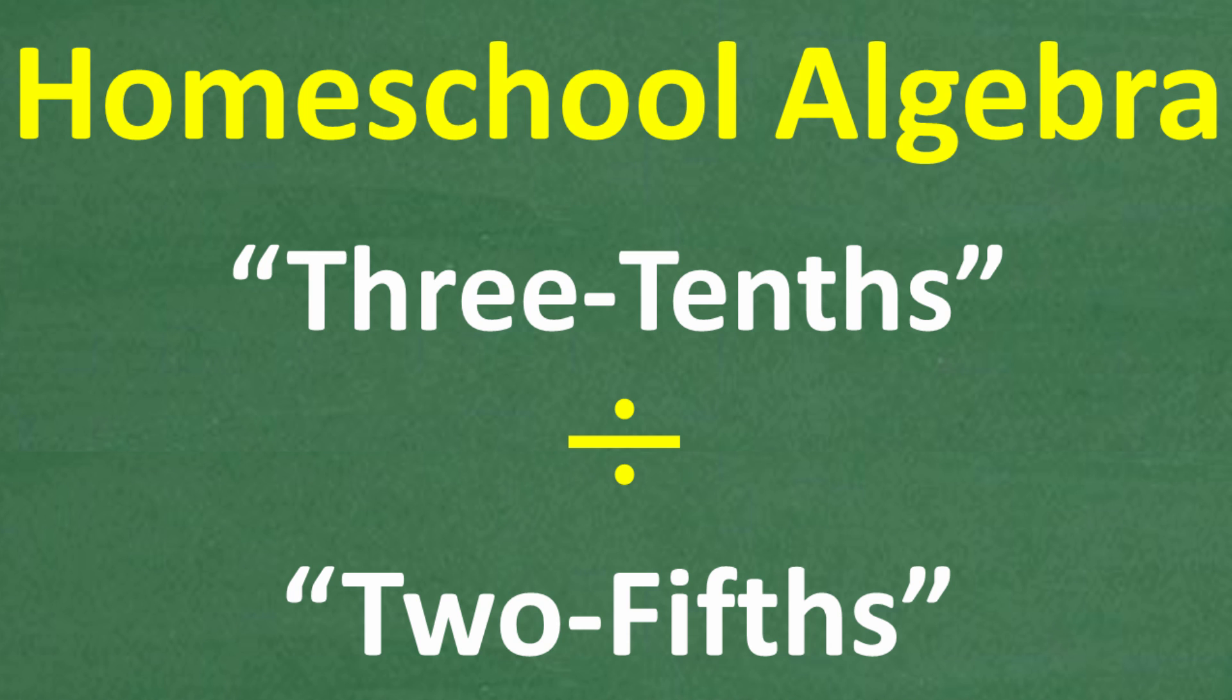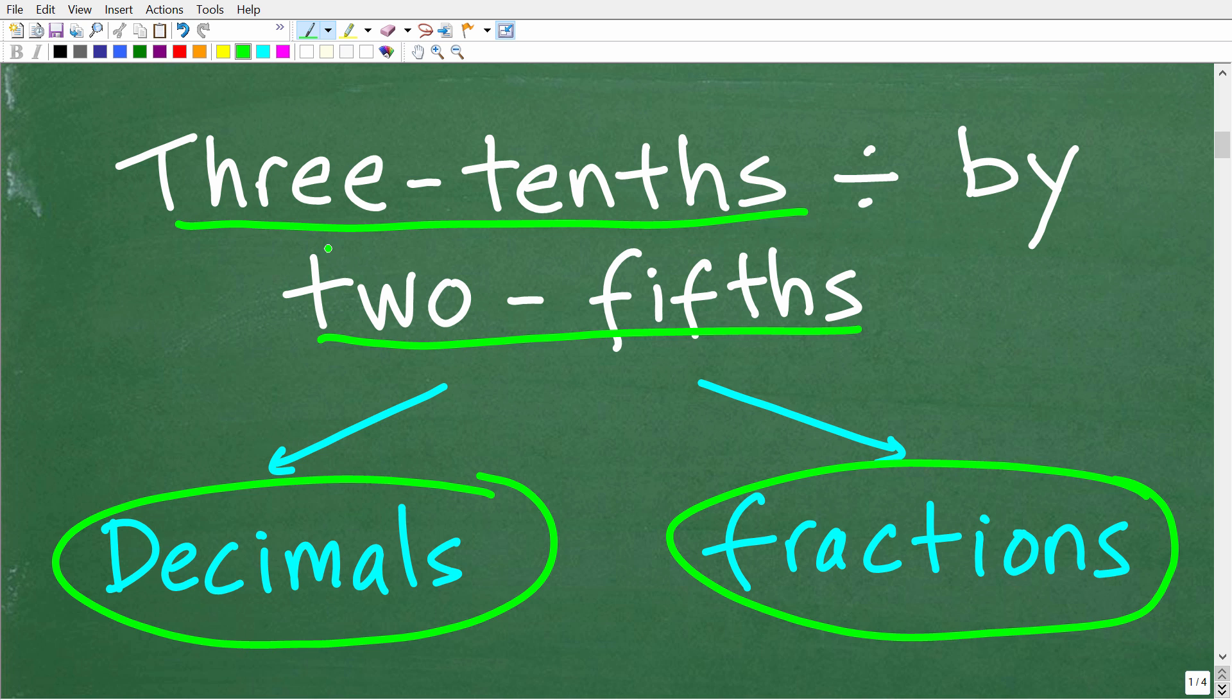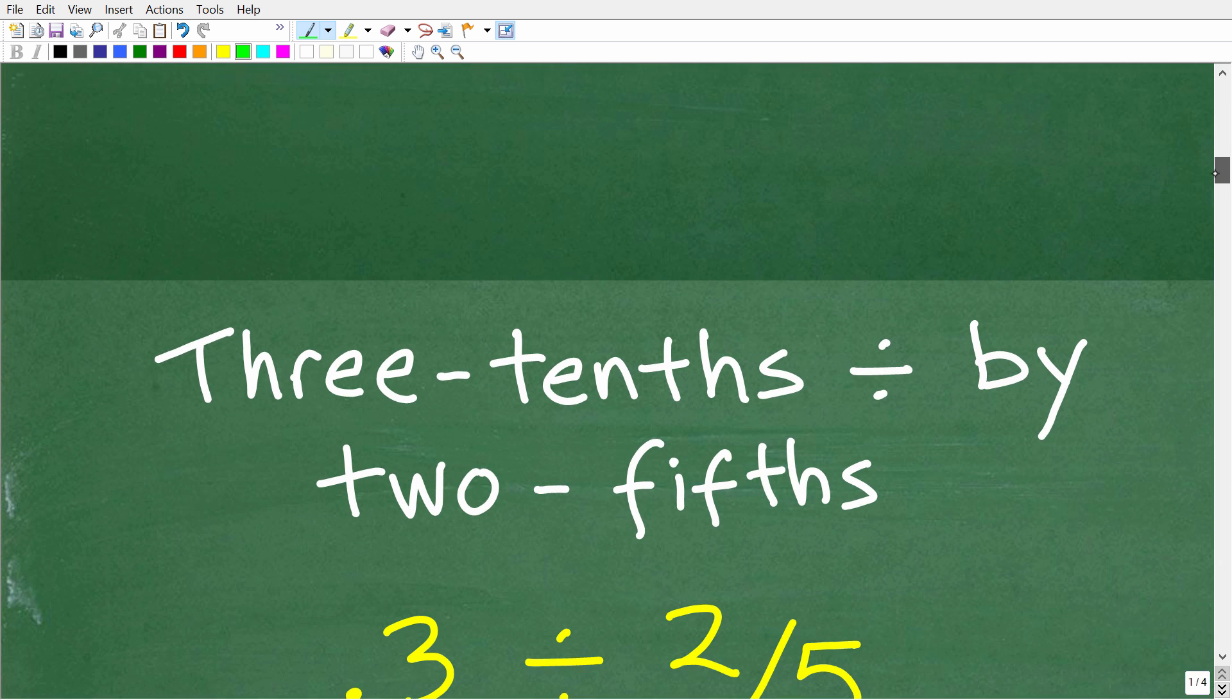Let's get into this problem: three-tenths divided by two-fifths. You definitely need to know how to do something like this if you are going to be taking algebra. The first step in solving this problem is to translate these words into actual numeric values. We can think about these words as either decimals or fractions or a combination of both. There's a couple different ways you can approach this problem, but we have to move from words into numbers.